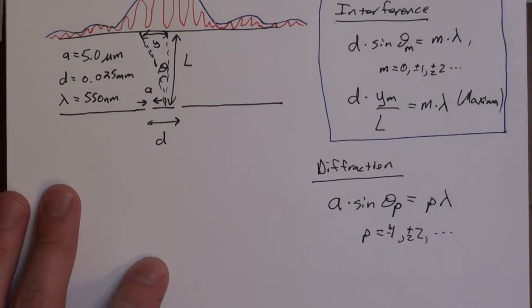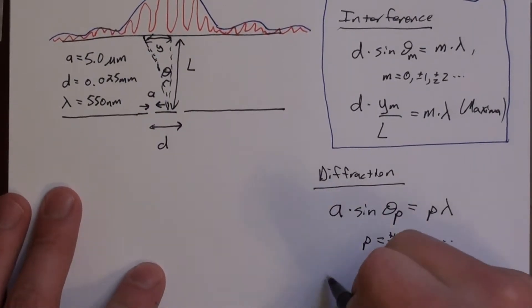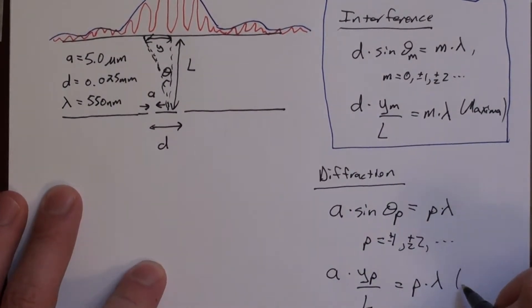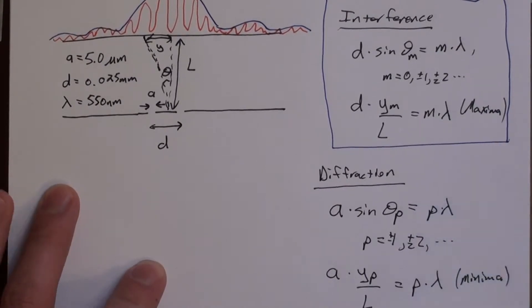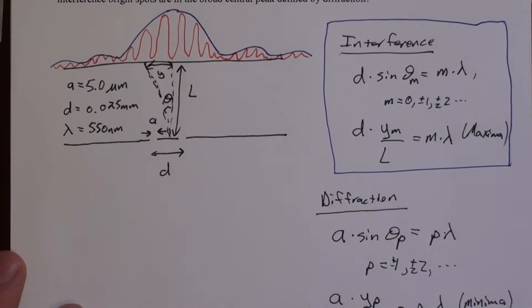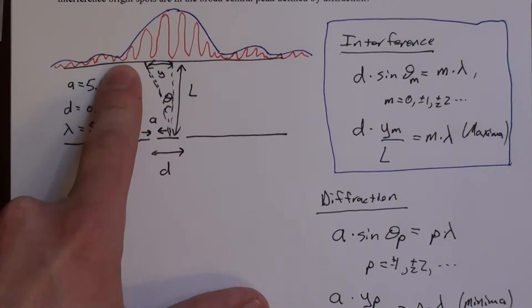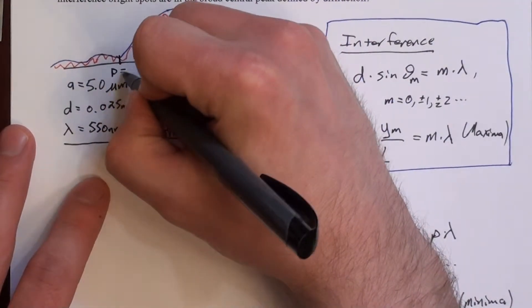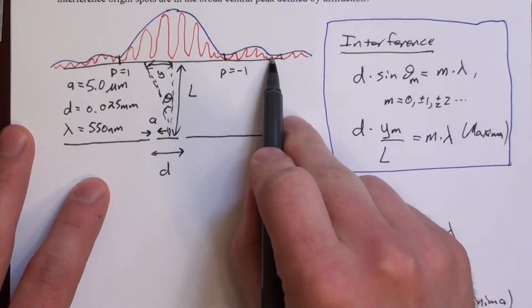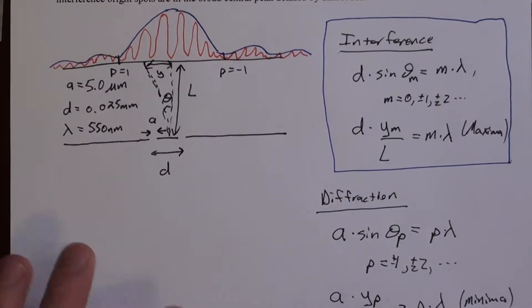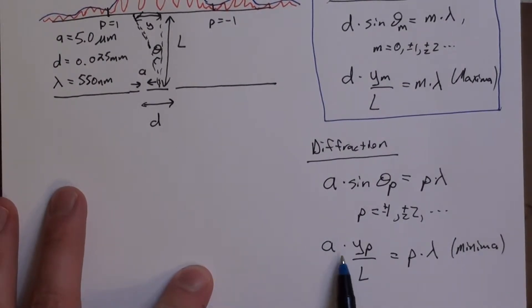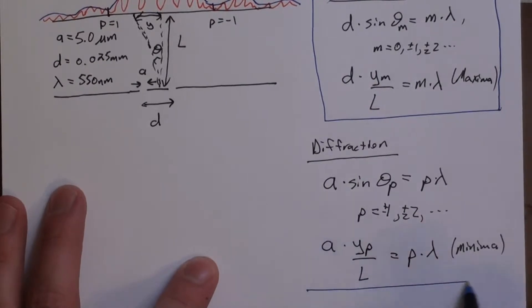And we can do the same trick. If L is large compared to Y, we can say A times Y sub P over L is P times lambda. And we should mention that these are minima, meaning these P's are to the dark spots. That's why there's no 0, because the center is actually a bright spot. But the first dark spot, we can say right here, that's P equals 1. So again, A times Y sub P over L equals P times lambda. So we'll put a box around that.